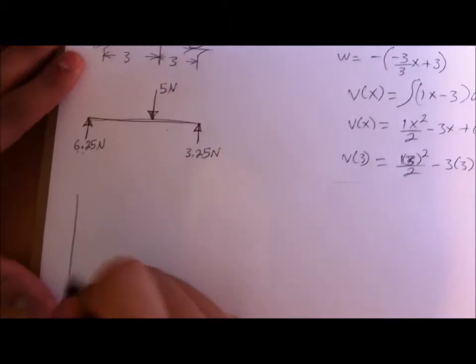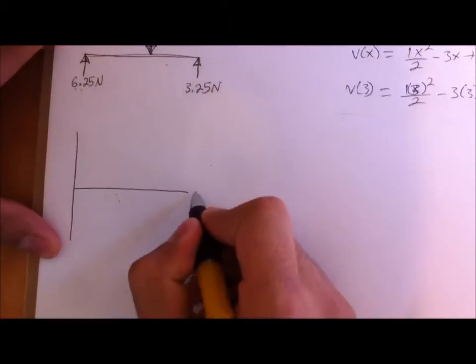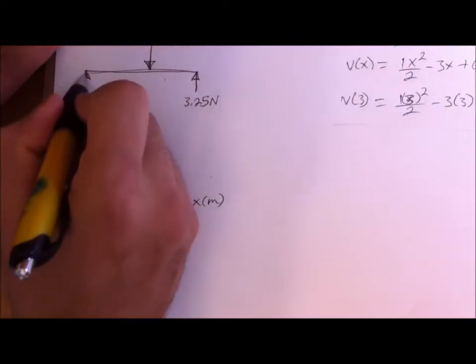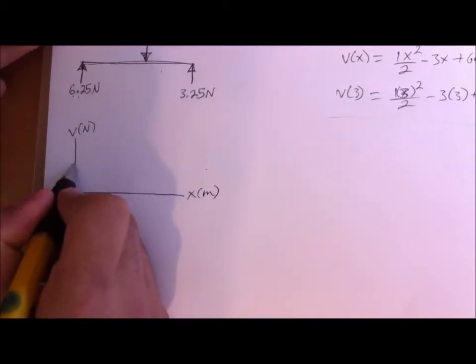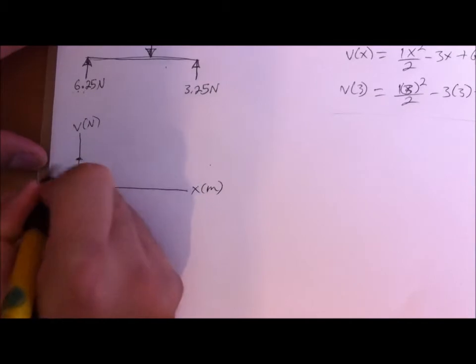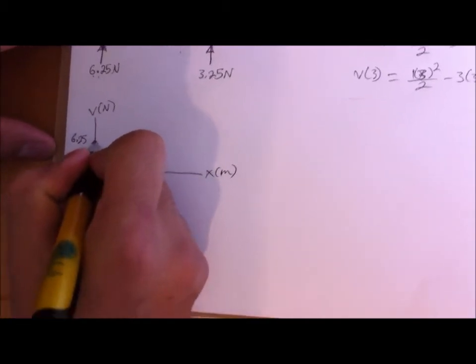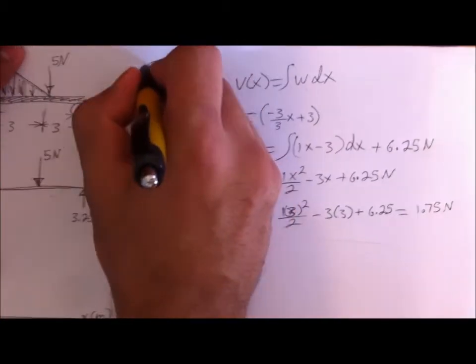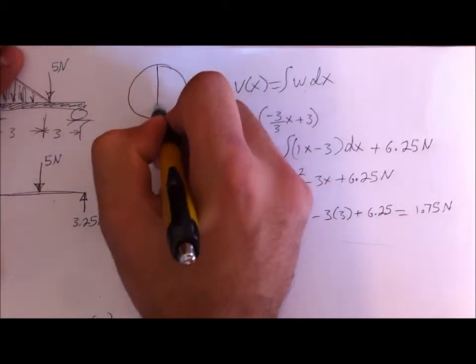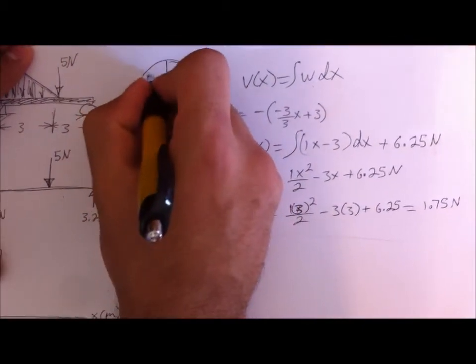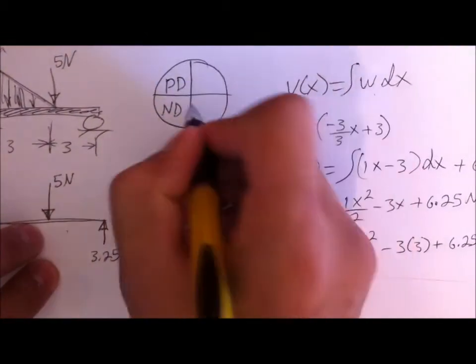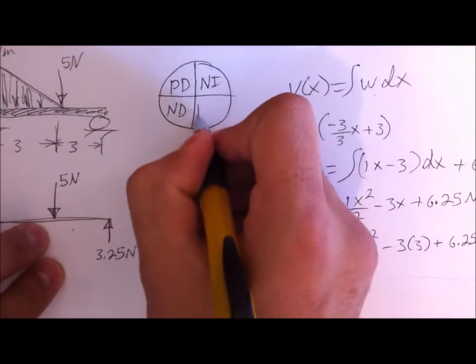Looking at this information, we draw our shear diagram with x in meters and V in N. Starting from here, we have the force in the upward direction, which is 6.25 N. I want to show you a quick shortcut — looking at this circle, I'll break it down: positive decreasing, negative decreasing, negative increasing, positive increasing.